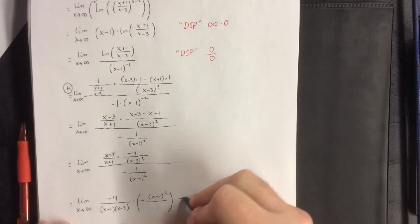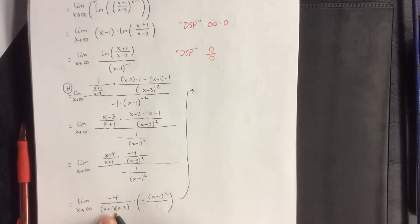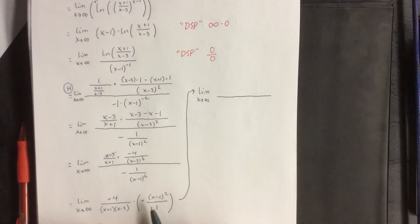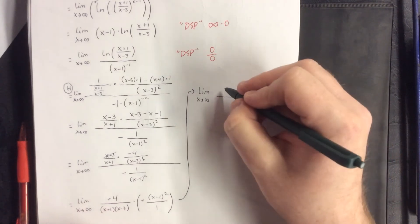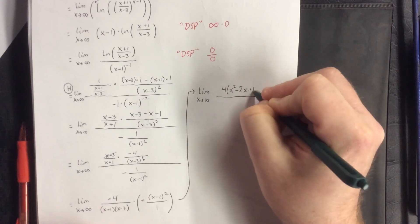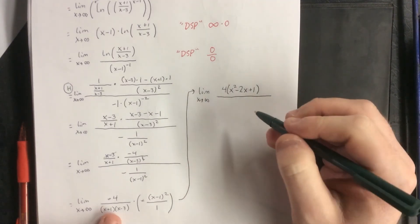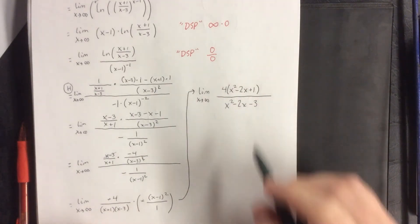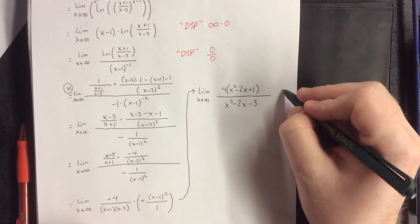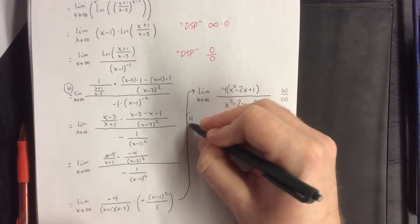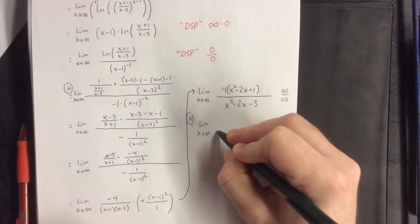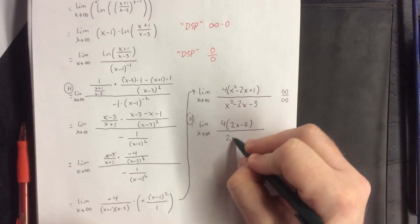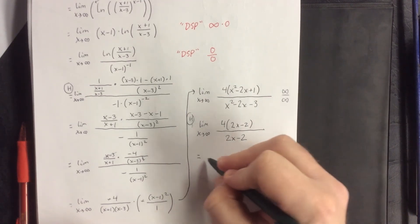Expanding everything: the limit as x approaches infinity of 4 times x squared minus 2x plus 1 in the numerator, over x squared minus 2x minus 3 in the denominator. As x goes to infinity this is still infinity over infinity, so we apply L'Hôpital's rule again. The derivative of the top is 4 times 2x minus 2, and the denominator is also 2x minus 2. The 2x minus 2 terms cancel, giving an answer of 4.